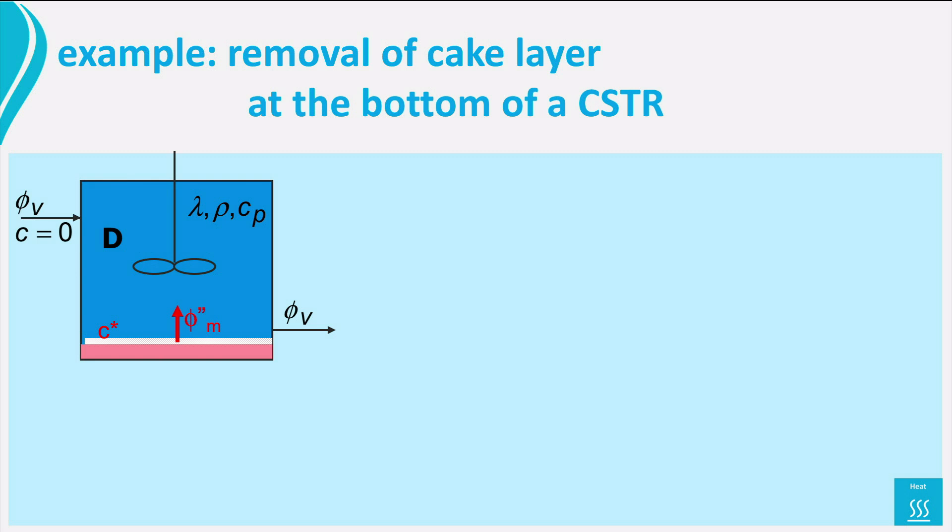We will look at a CSTR in which during the course of the process a cake layer has been formed at the bottom. This layer needs to be removed by flushing the CSTR with clean water in which the cake will slowly dissolve. The question is, how slowly? We can find this by setting up a balance and find the flux of the cake material to the water.